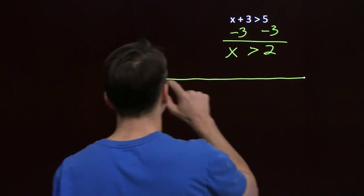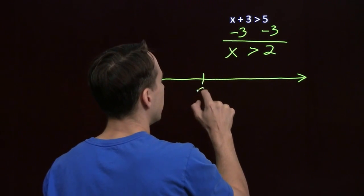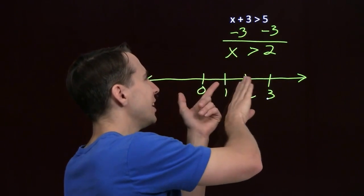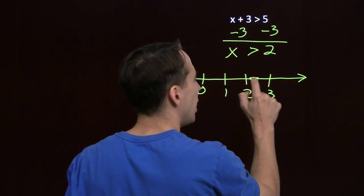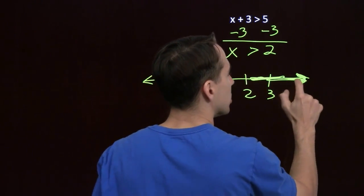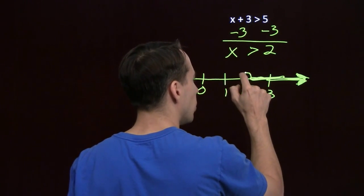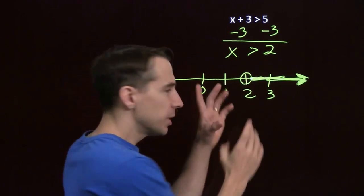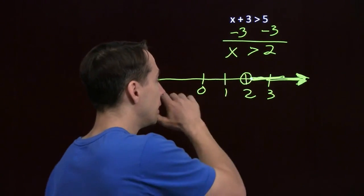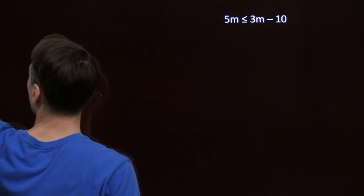We can also graph on the number line — just plot the values of x that work. We have our number line here with 0, 1, 2, 3, and so on. We want the part greater than 2, so we're going to shade all the number line larger than 2, and even shade the arrow to show we keep going. But at 2, since 2 isn't a solution, we put a big open circle there to show we start at 2 but don't include it, then go to the right. That shows our solution is all numbers greater than 2.